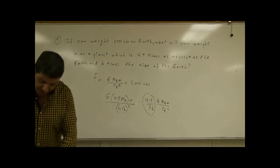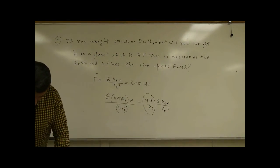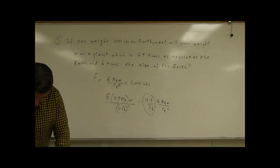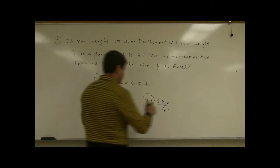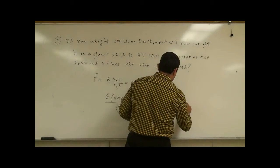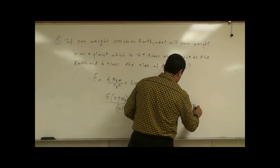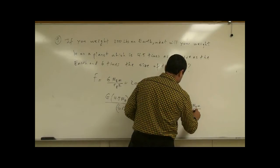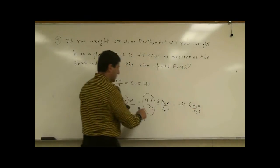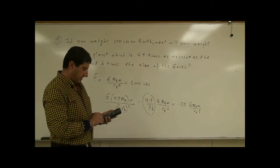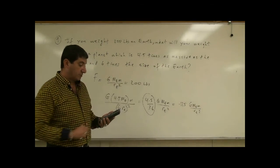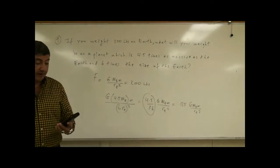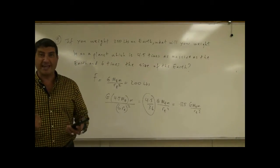Then you have radius of Earth squared. So this number, 4.5 over 36, 4.5 divided by 36, 0.125. This ratio came out to be 0.125.